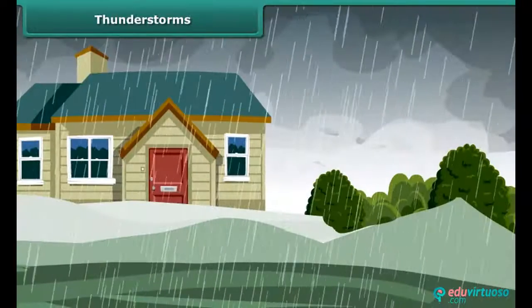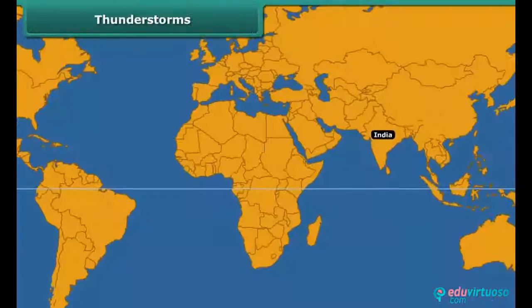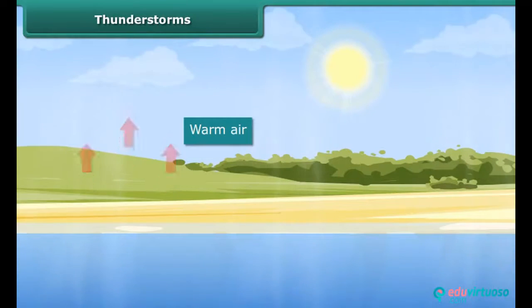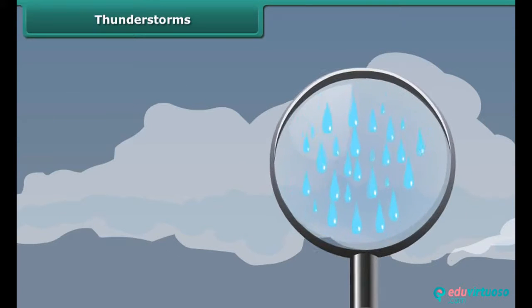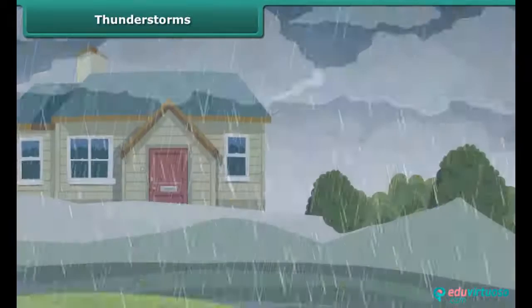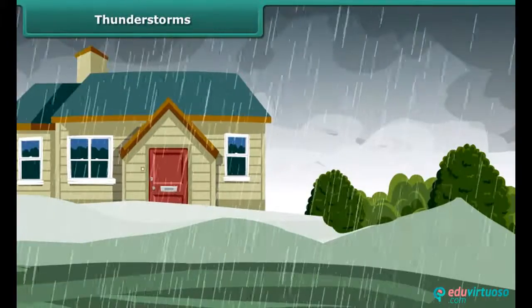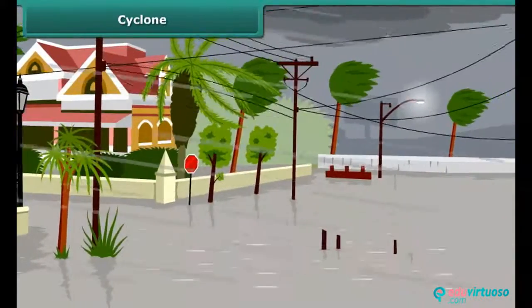Where does lightning come from, and why does it sometimes strike the ground? A storm with lightning and thunder is called a thunderstorm. It develops in hot, humid tropical areas like India. They are formed by the uplifting of warm and humid air. When humid air is lifted, it cools down and moisture condenses to form clouds. Water droplets in the cloud grow in size, and as the cloud extends further upward, water droplets fall down creating sound and lightning — this is a thunderstorm.